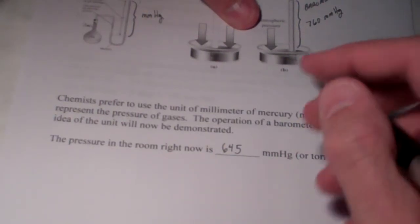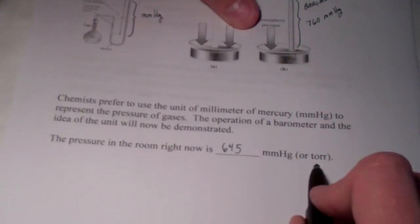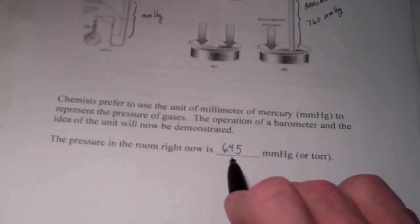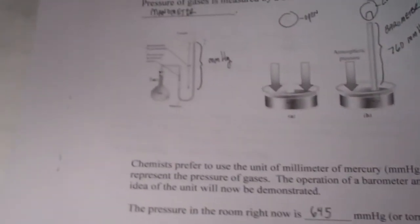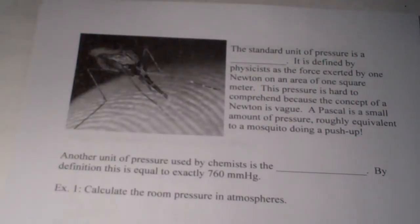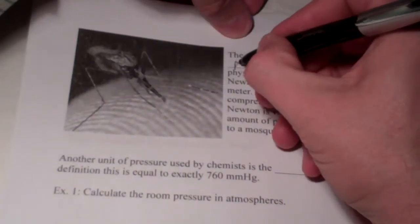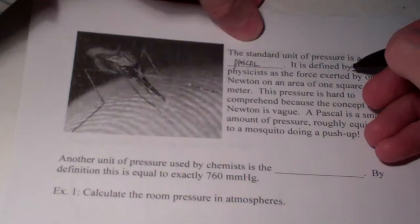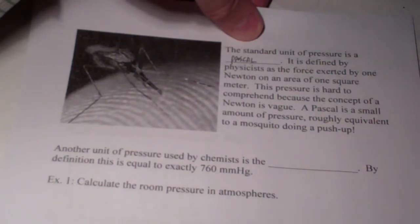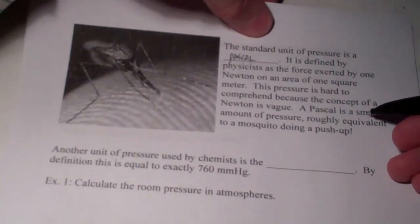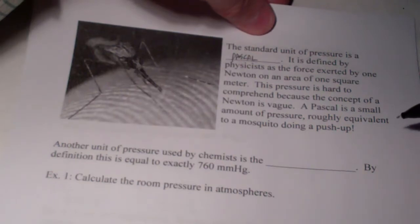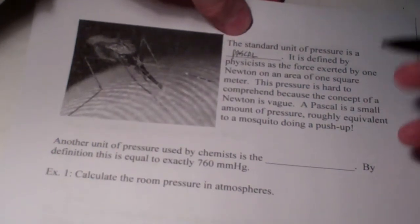That unit millimeters of mercury is sometimes called Torr — so mmHg and Torr refer to the same unit. The standard SI unit of pressure is the Pascal, defined as the force exerted by one Newton on an area of one square meter. A Pascal is a very tiny amount of pressure — roughly equivalent to the pressure exerted by a mosquito doing a push-up.